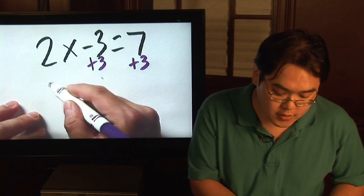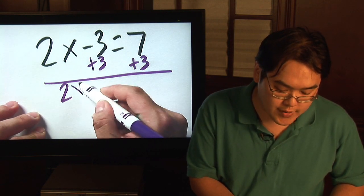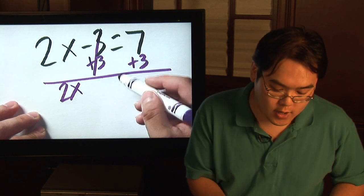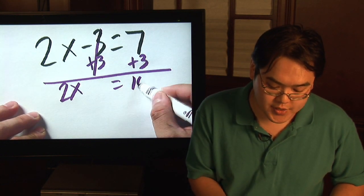So as a result, you have 2x, which you never touched, negative 3 plus 3, which completely cancels out, and then 7 plus 3 you know is 10.